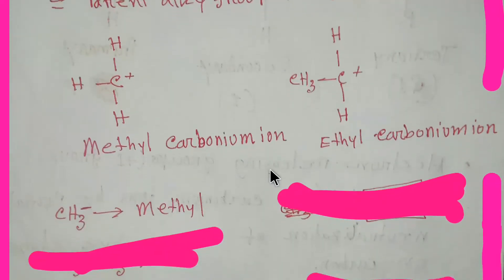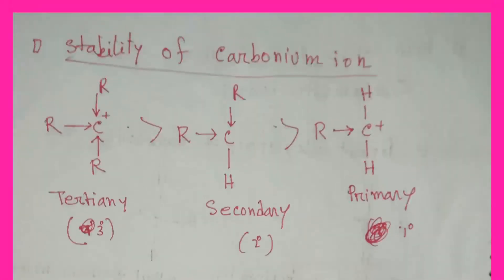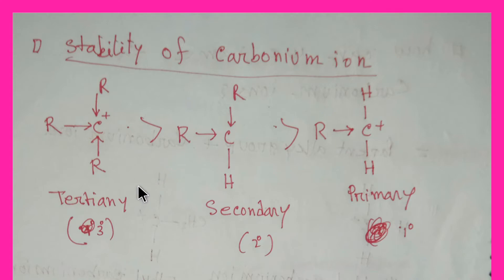Just remember this. Now we have to understand the stability of carbonium ions. This carbon is 3rd degree, or tertiary, because it has 3 alkyl groups. This carbon is 2nd degree, or secondary, because it has 2 alkyl groups. And this carbon is 1st degree, or primary, because it has only 1 alkyl group — giving us tertiary, secondary, and primary carbonium ions.